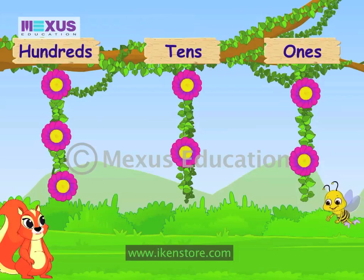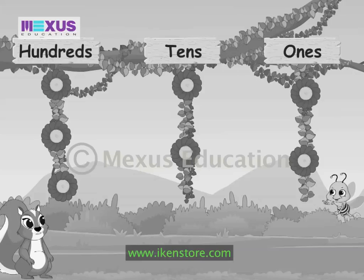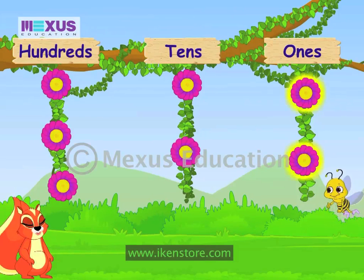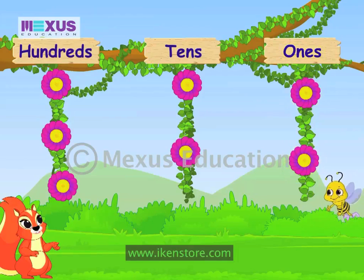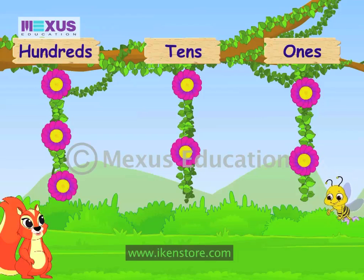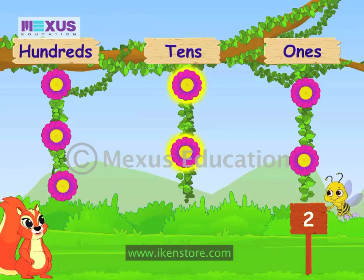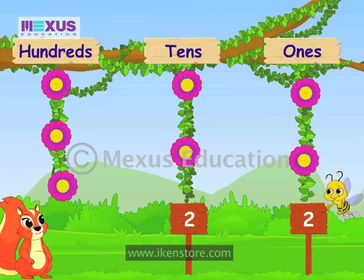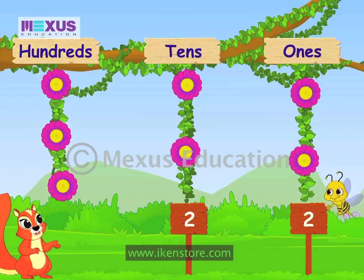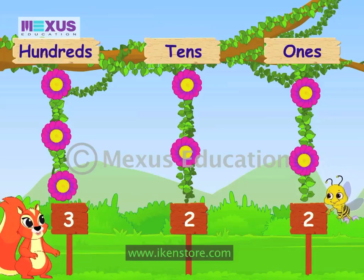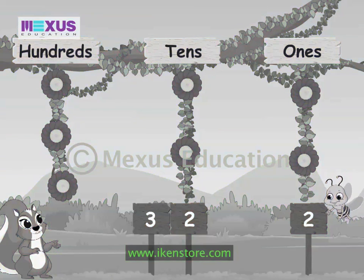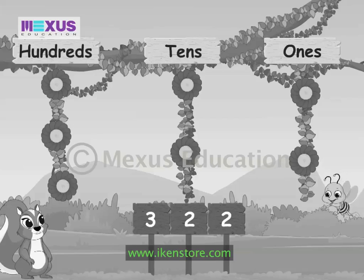Wow, that was so good. Now I can represent numbers on an abacus. Okay, now let me see if you can identify the number represented using these flowers. Consider this as an abacus and tell me the number. There are 2 flowers on the 1's column, so the number at the 1's place will be 2. There are 2 flowers on the 10's column too, so the number at the 10's place will be 2. There are 3 flowers on the 100's column, so the number at the 100's place will be 3. So the number is 322. Very good, Amber.